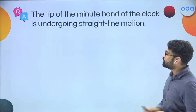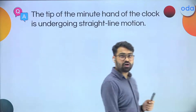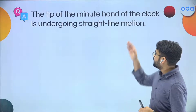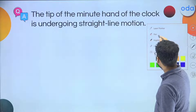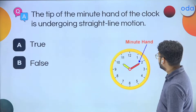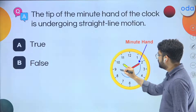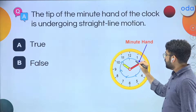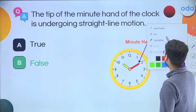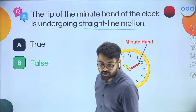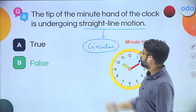Let's go to the next question. The next question says: the tip of the minute hand of the clock is undergoing straight line motion. Did we study this? What did we study about the minute hand? It was going around like this — this is the minute hand, it goes like this. And the question says this motion is straight line motion. The answer is no — this is circular motion, not straight line motion. That is why the statement is false. I hope you have understood at least this much.